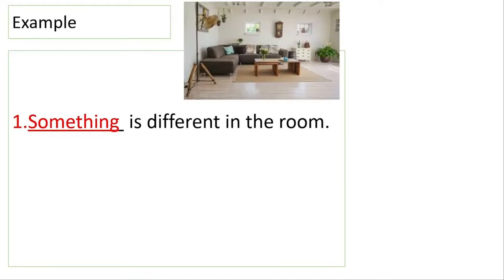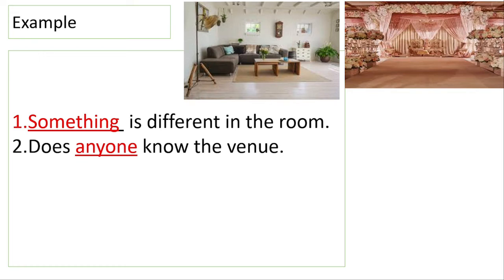Example number one: dash is different in the room. The answer is: something is different in the room. Here you can see it is not specified what is different, so 'something' is an indirect pronoun. Next example: does dash know the venue? The answer is: does anyone know the venue? So 'anyone' is an indirect pronoun.